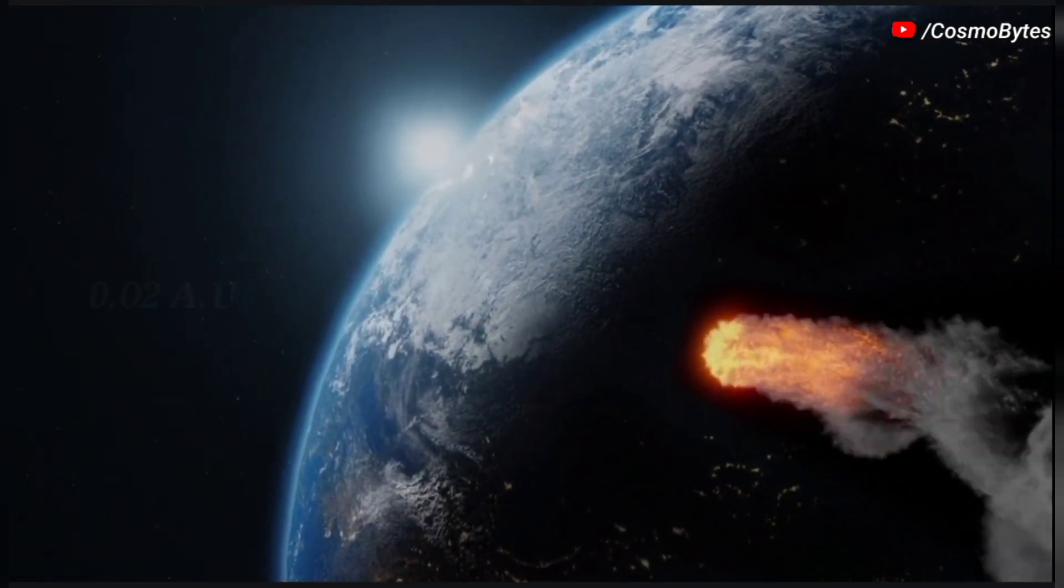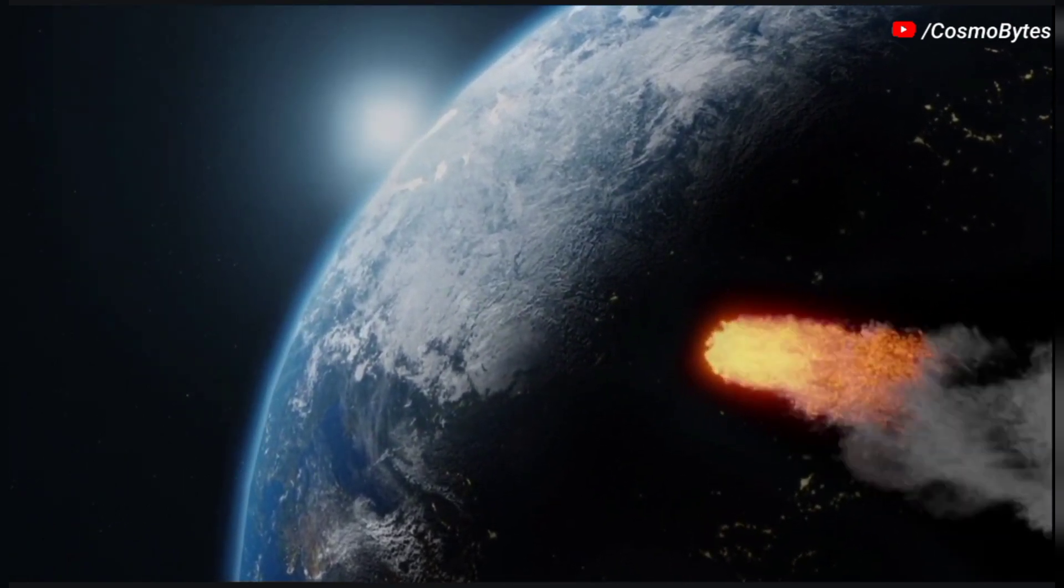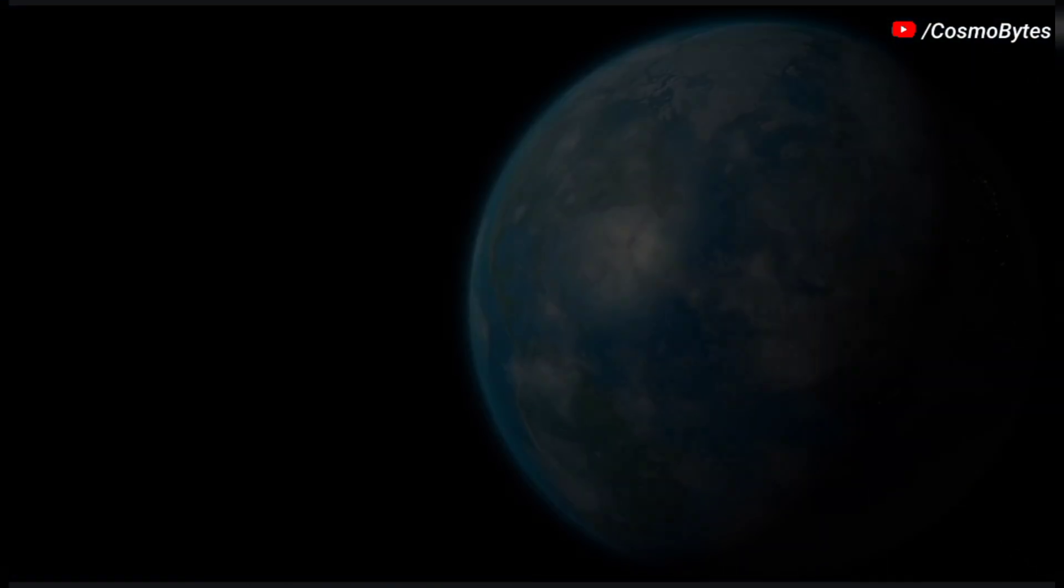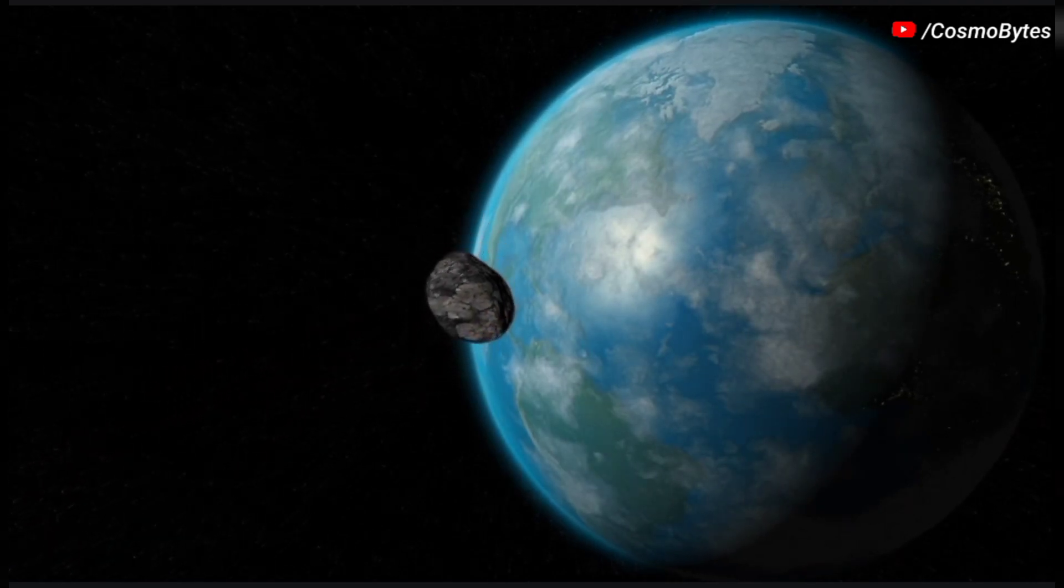2017 BU's orbit is 0.02 AU from Earth's orbit at its closest point. This means that there is a wide berth between this asteroid and Earth at all times.